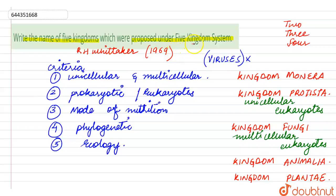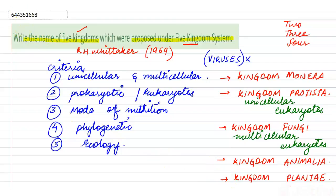The names of the five kingdoms which were given here are Kingdom Monera, Kingdom Protista, Kingdom Fungi, Kingdom Animalia, and Kingdom Plantae. So this is all about this query, thank you.